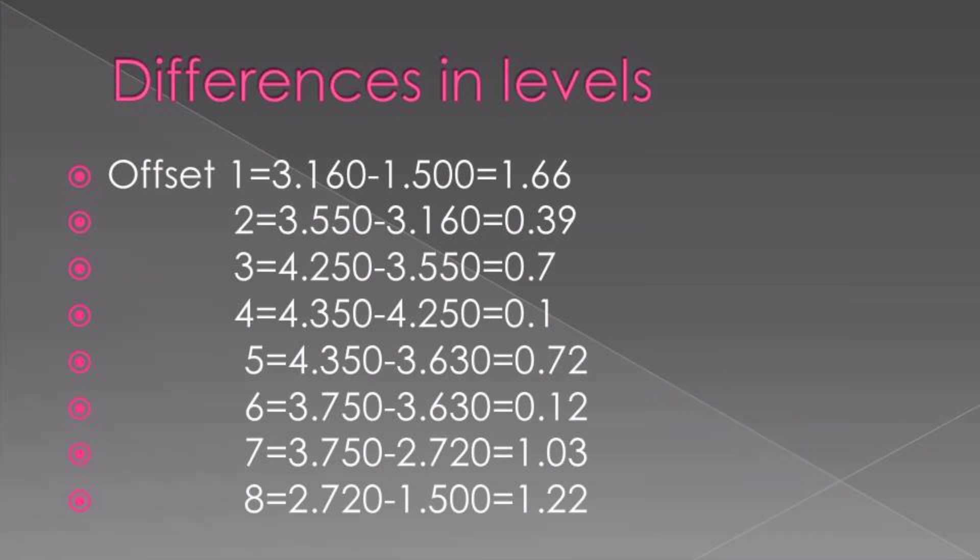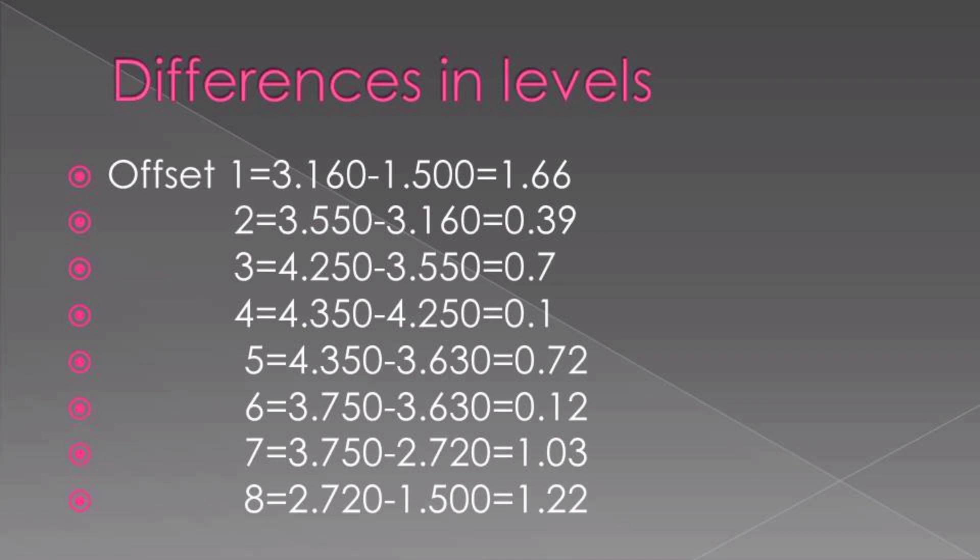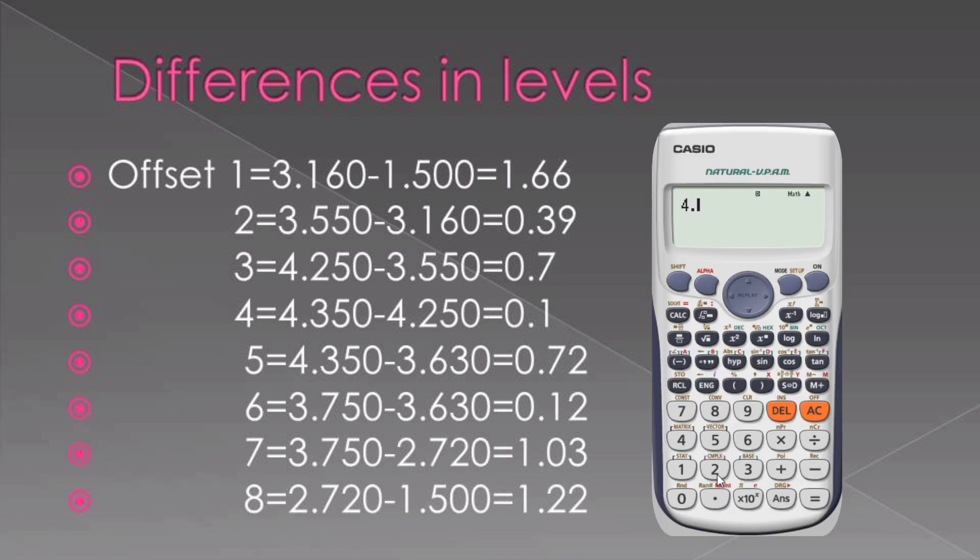Then we move to the second point. The difference between the second point and the third point, by the look of things we still are descending. So 3.16 and 3.55, that 3.55 shows us we are moving at a lower level. The difference between those two will be 0.39. Then the same is done on the third point and the fourth point. So the difference between those two also we are descending, will give us 0.7.